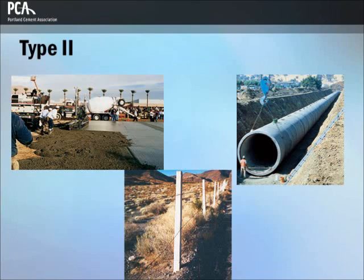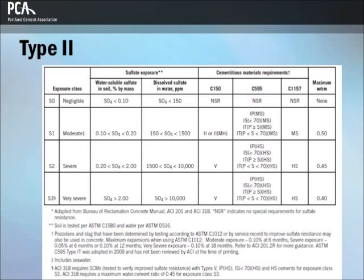Type 2 Portland cement is used where protection against moderate sulfate attack is necessary. Sulfates in moist soil or water may enter the concrete and react with hydrated C3A, resulting in expansion, scaling, and cracking of concrete. The table shows types of cement required for concrete exposed to sulfates in soil or water. Type 2 cement has moderate sulfate resistance because it contains no more than 8% tricalcium aluminate. Additionally, concrete exposed to seawater is often made with Type 2 cement.